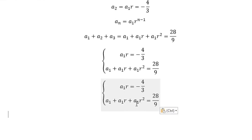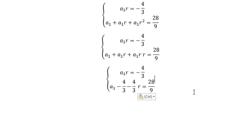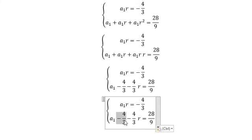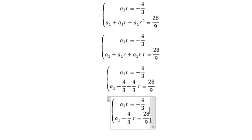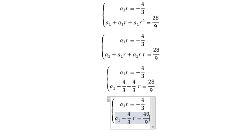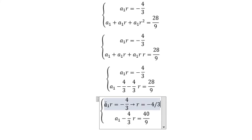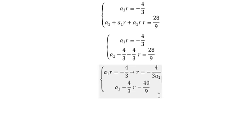We know that a1·r squared can be written as a1·r multiplied by r, and we substitute a1·r with negative 4 over 3. Moving this to the right gives positive 4 over 3. We calculate this and get 40 over 9. Dividing both sides by a1·r gives us equation number 2.